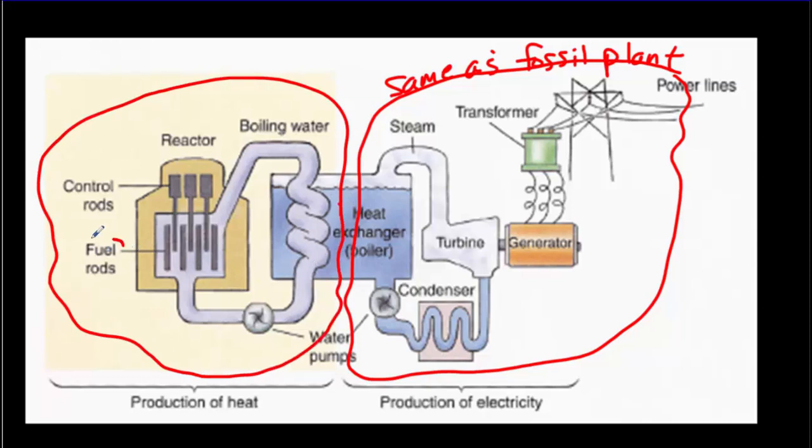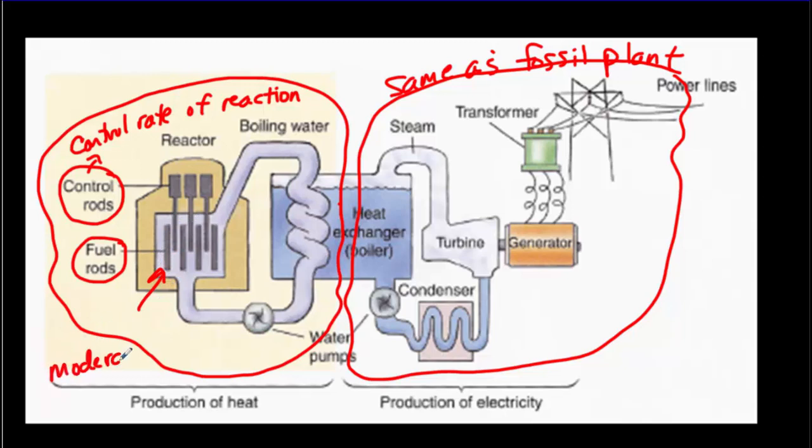So our fuel is going to be arranged in rods, fuel rods. I'll talk more about that arrangement later. And there's going to be something called control rods. They're going to control the rate of reaction. And then in the combustion chamber the fuel rods are surrounded by what's called a moderator. The moderator in most nuclear power plants is simply water.